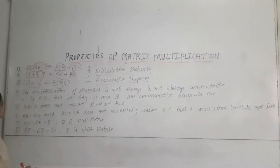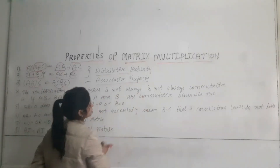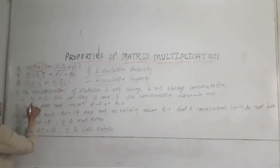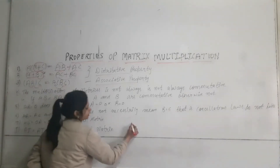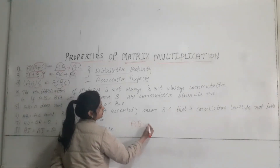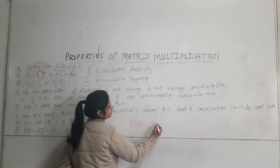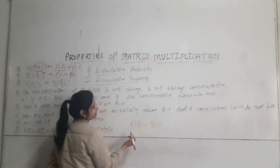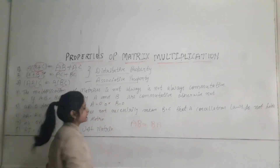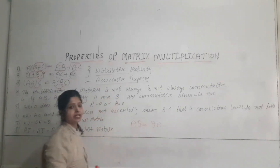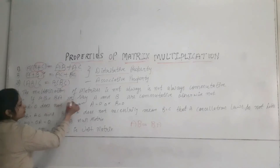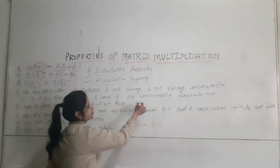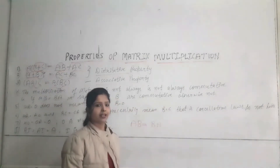The fourth property is that multiplication of matrices is not always commutative. We cannot always say AB is equal to BA. Sometimes maybe AB is equal to BA, but this is not necessarily equal. That means, if AB is equal to BA, we say the matrices are commutative. Otherwise, no.